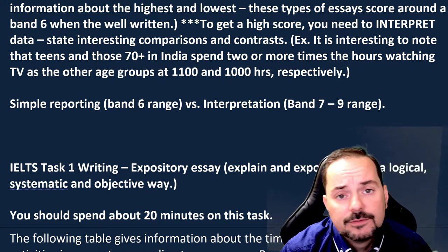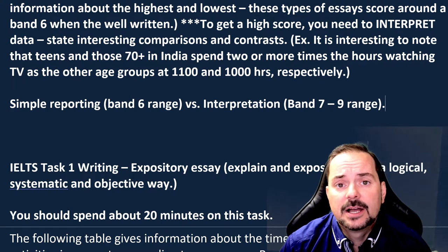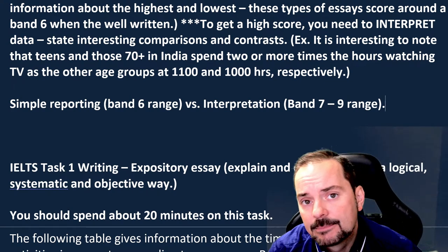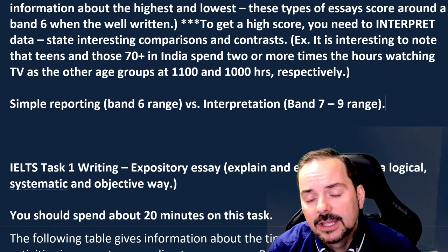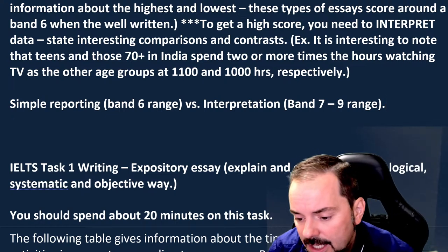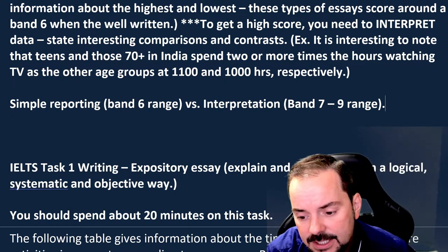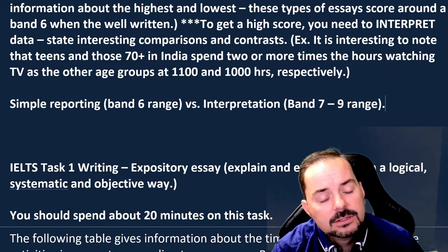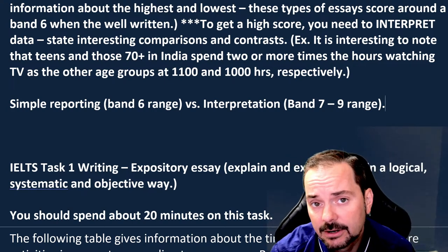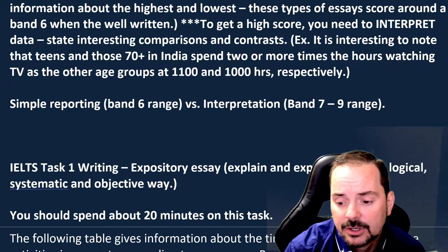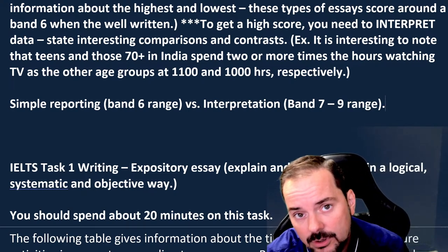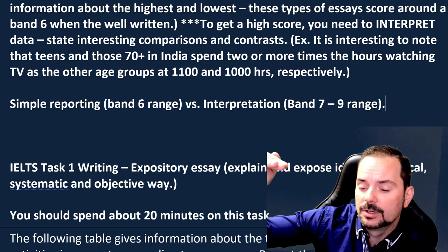For those of you who need band seven, eight, or nine, you need to look at data from the perspective of interpreting it in English, not just reporting it. If you're okay with just getting a band six, then simple reporting is all you need — just pay really careful attention to grammar and vocabulary, because if you make mistakes with those while just reporting, your score will be lower.